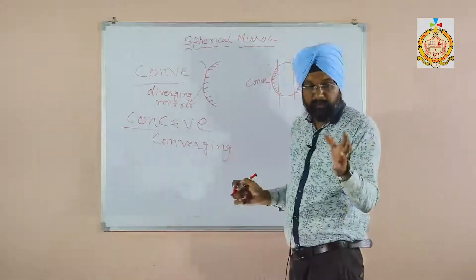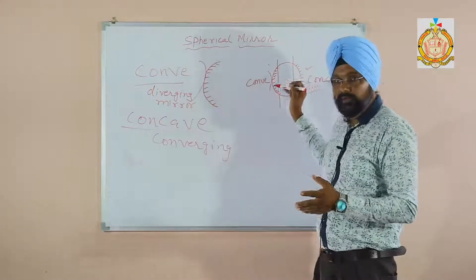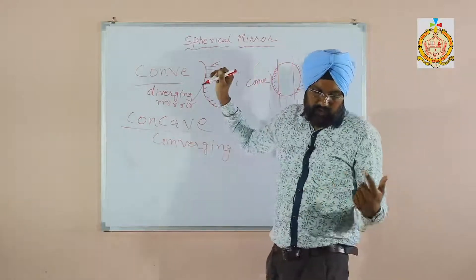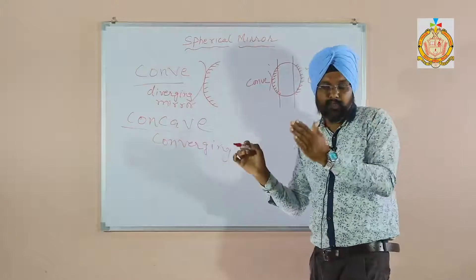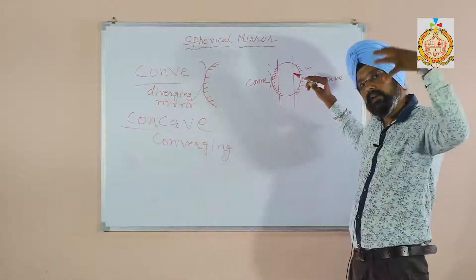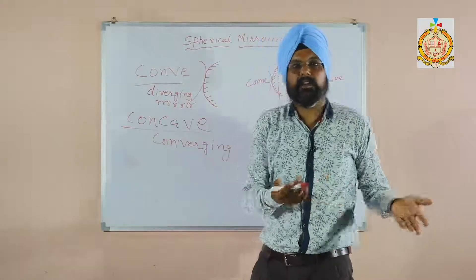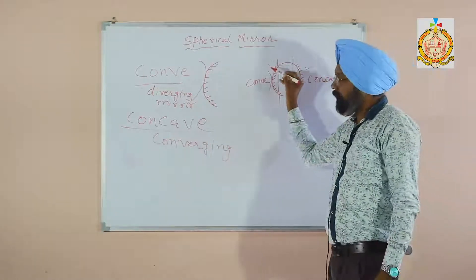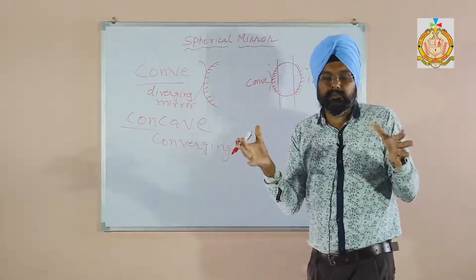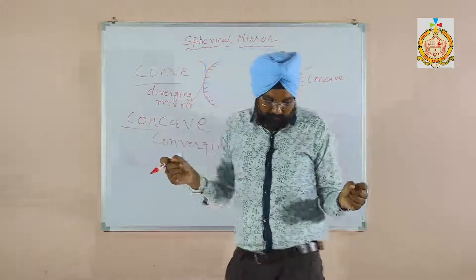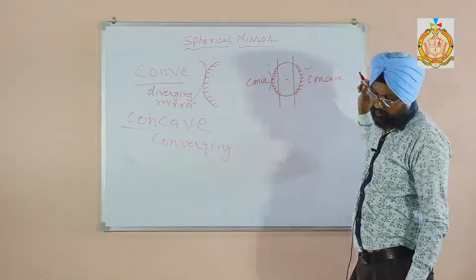The main technical terms: first one is center of curvature. All mirrors are a part of a sphere, so the center of that sphere is called the center of curvature. So the center of the sphere of which the mirror is a part is called the center of curvature. Second one is radius of curvature — that means the radius of the sphere in which the mirror is a part. All the technical terms you have to relate with the sphere only. Next one is pole — pole means the geometrical center of the spherical surface.